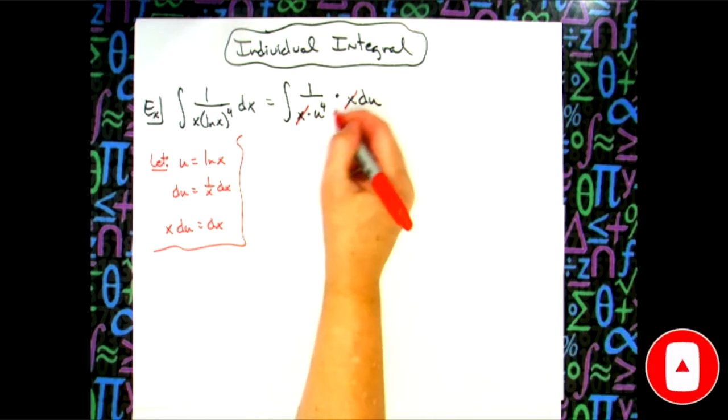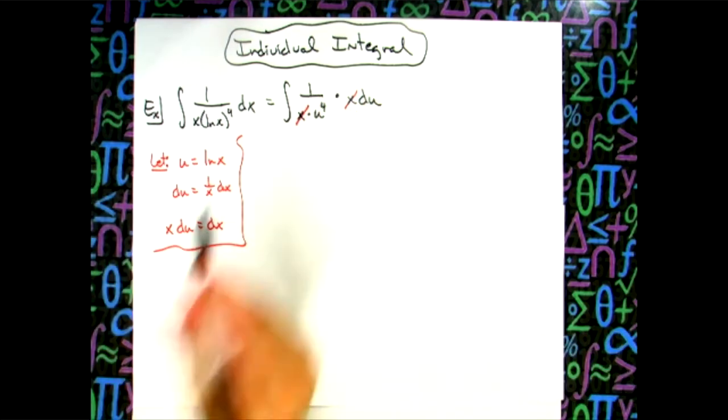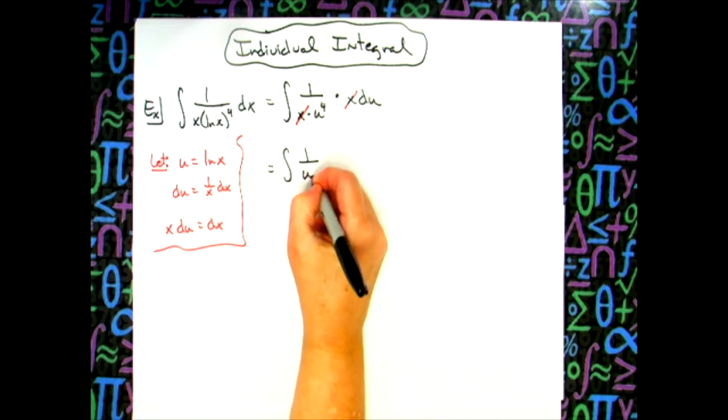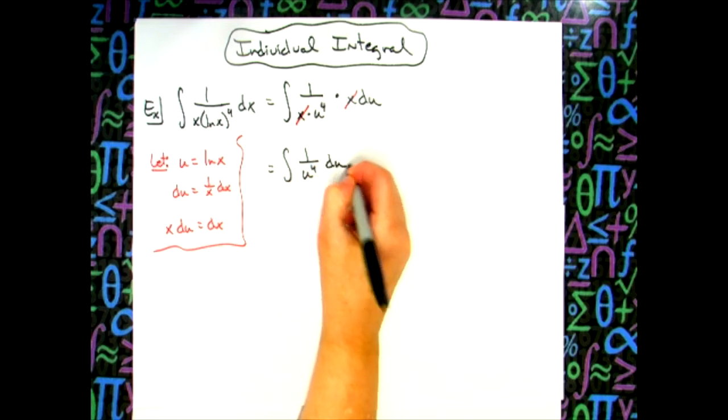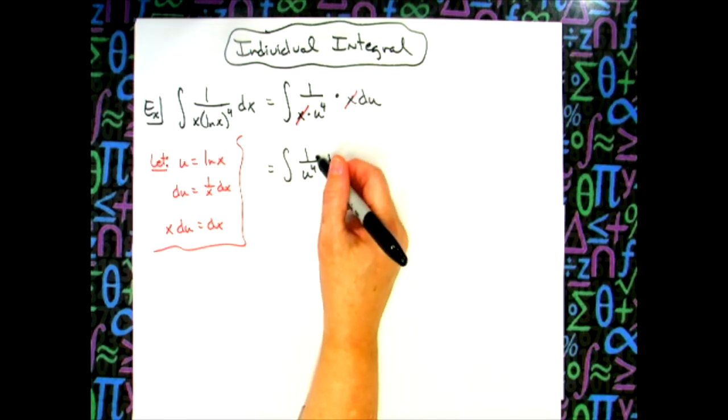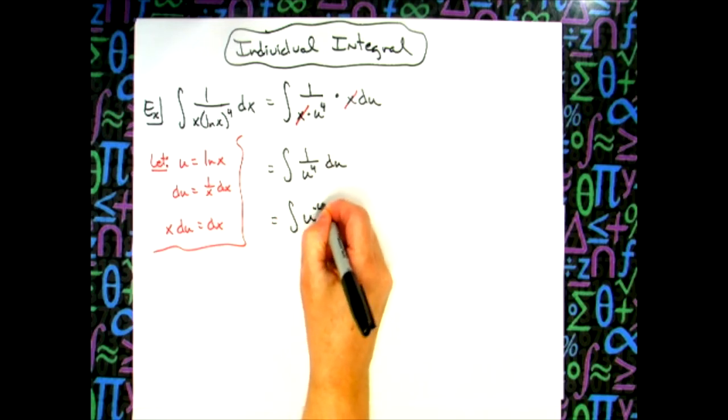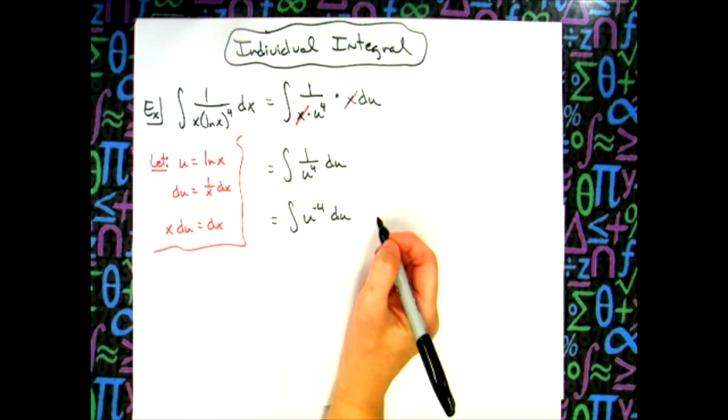Which is what we want. We now have an integral all in terms of u. So we can look at this as the integral of 1 over u to the 4 du. To be able to integrate this, I need this u to the 4th in the numerator. So we'll move it up with our laws of exponents and make it negative. So I'll have the integral of u to the negative 4 du. Now I'm ready to integrate.